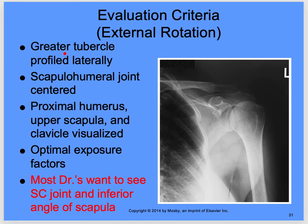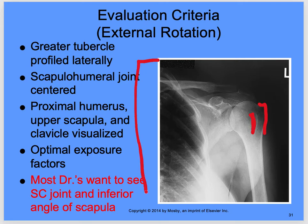The evaluation criteria: your greater tubercle is in profile, and we can see the lesser tubercle here. The scapulohumeral joint is centered, proximal humerus, upper scapula, and clavicle are all visualized with optimal exposure factors. Open your collimation a little bit more here because you want to see the rest of the clavicle and the sternoclavicular joint. Most doctors want to see the SC joint and the inferior border of the scapula.